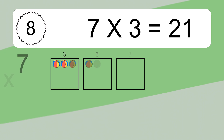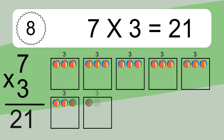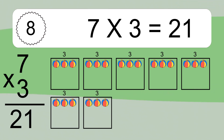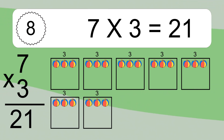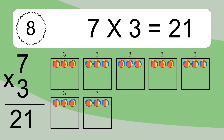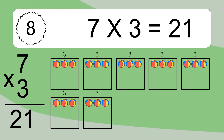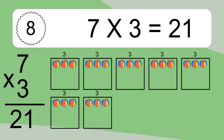7 times 3 equals what? 7 times 3 equals 21. We have 7 boxes and each box has 3 colorful balls inside. If you count all the balls in all the boxes together, you will have 7 times 3 balls. This equals 21 balls.